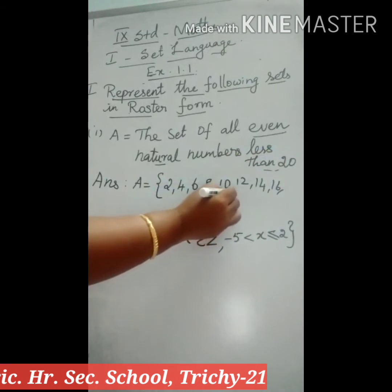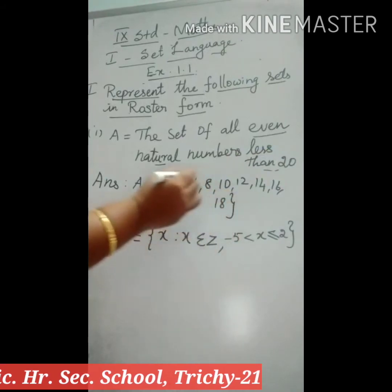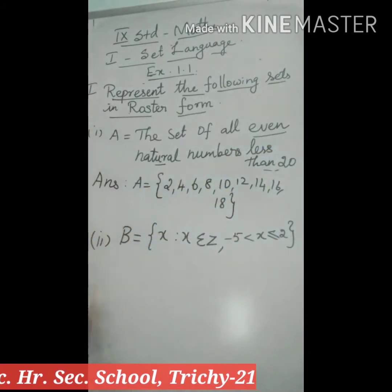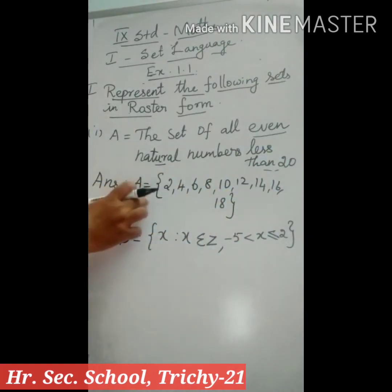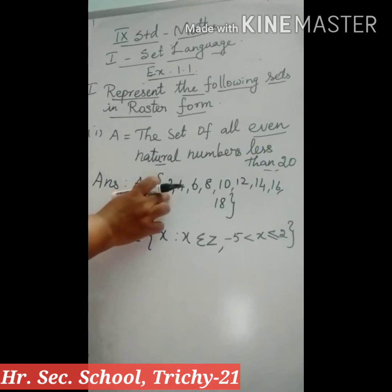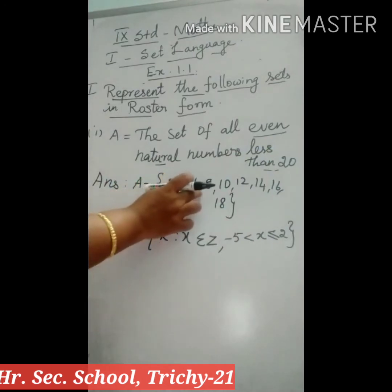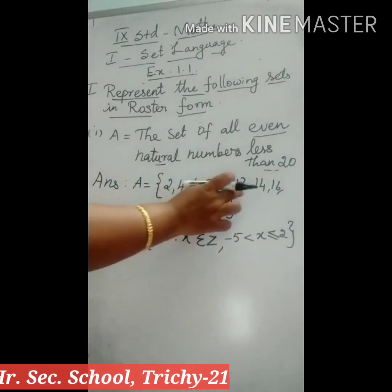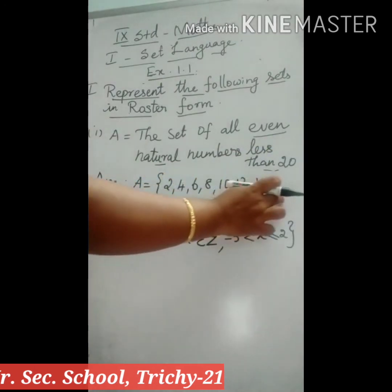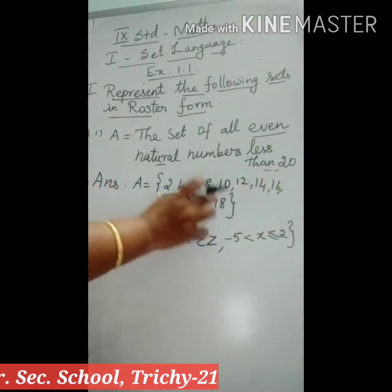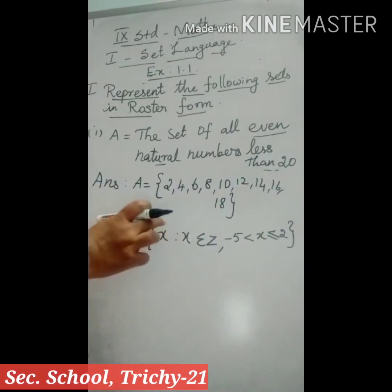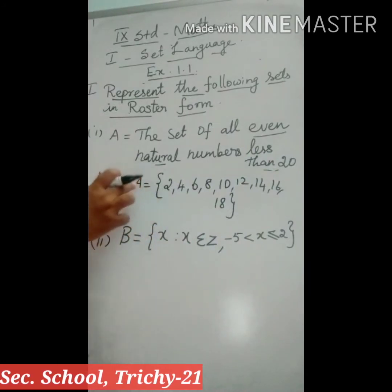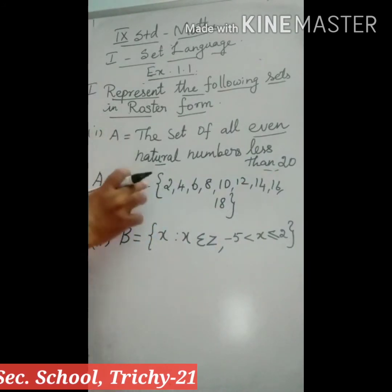So up to 18 you have to write the answer. A is equal to {2, 4, 6, 8, 10, 12, 14, 16, 18}. This is the set A.